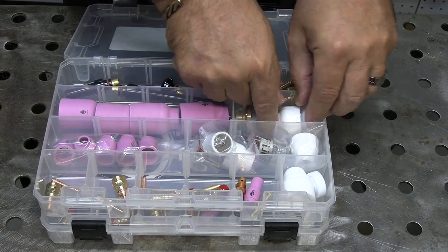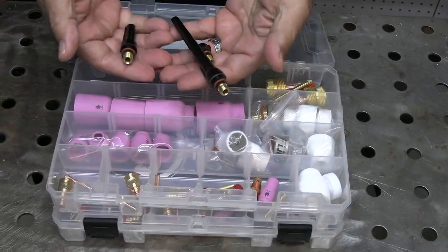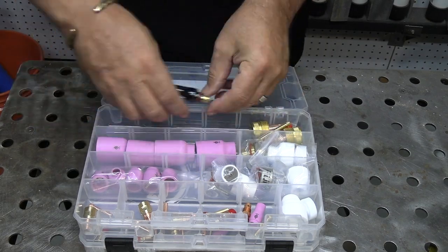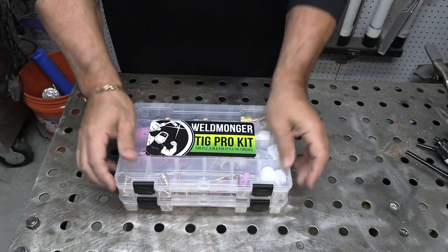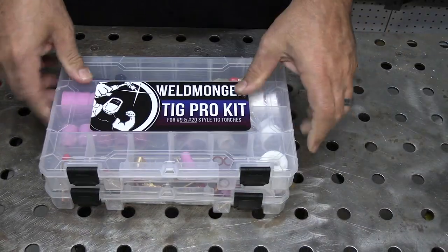This kit also comes with an assortment of back caps. The long one, the short button, and the intermediate one along with a 1/16th, 3/32, and 1/8th 2% lanthanated electrode for you to try out.